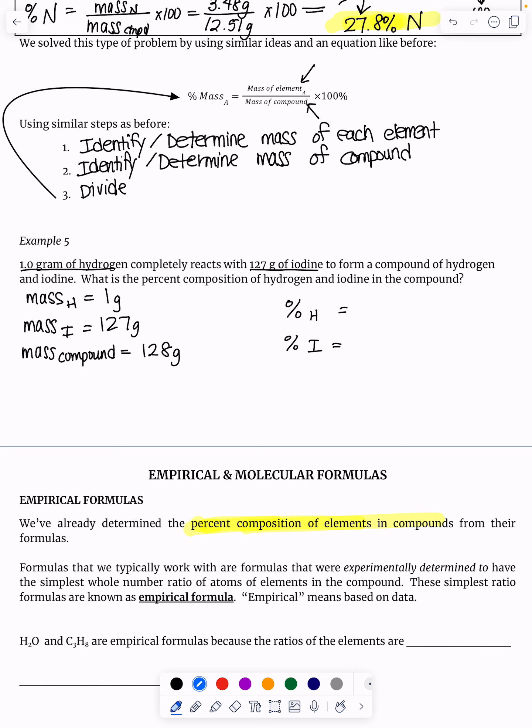If I had one gram of hydrogen and 127 grams of iodine in this compound, and the mass of the compound is 128 grams, the percentage of hydrogen would be the one gram of hydrogen divided by the 128 grams of the HI compound times 100.